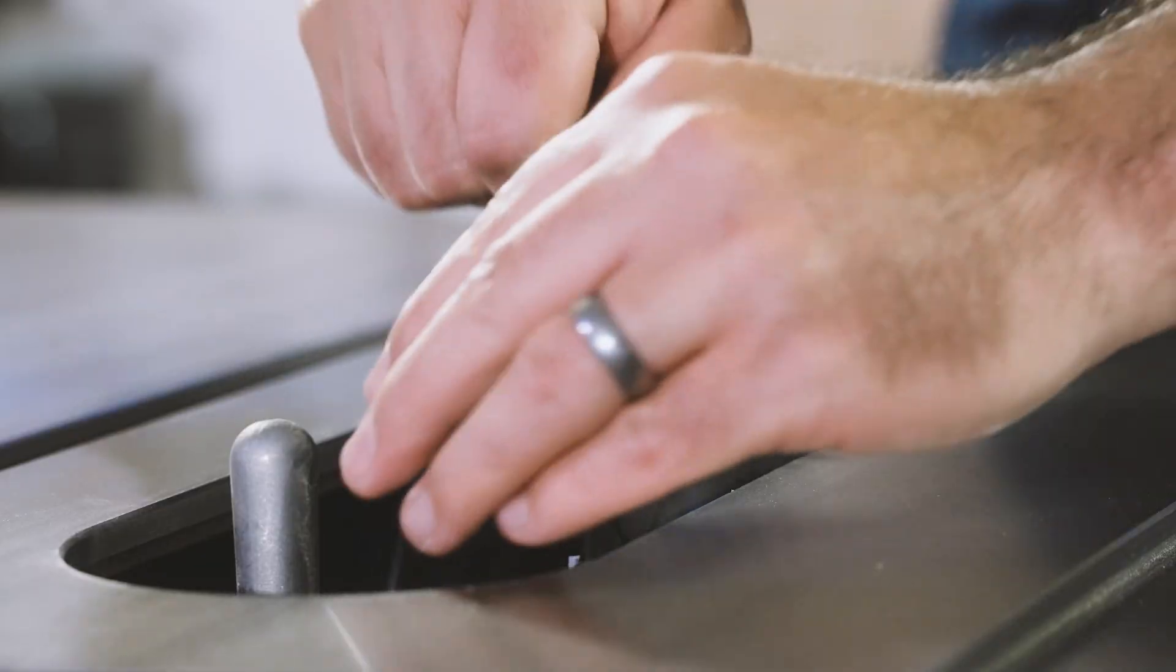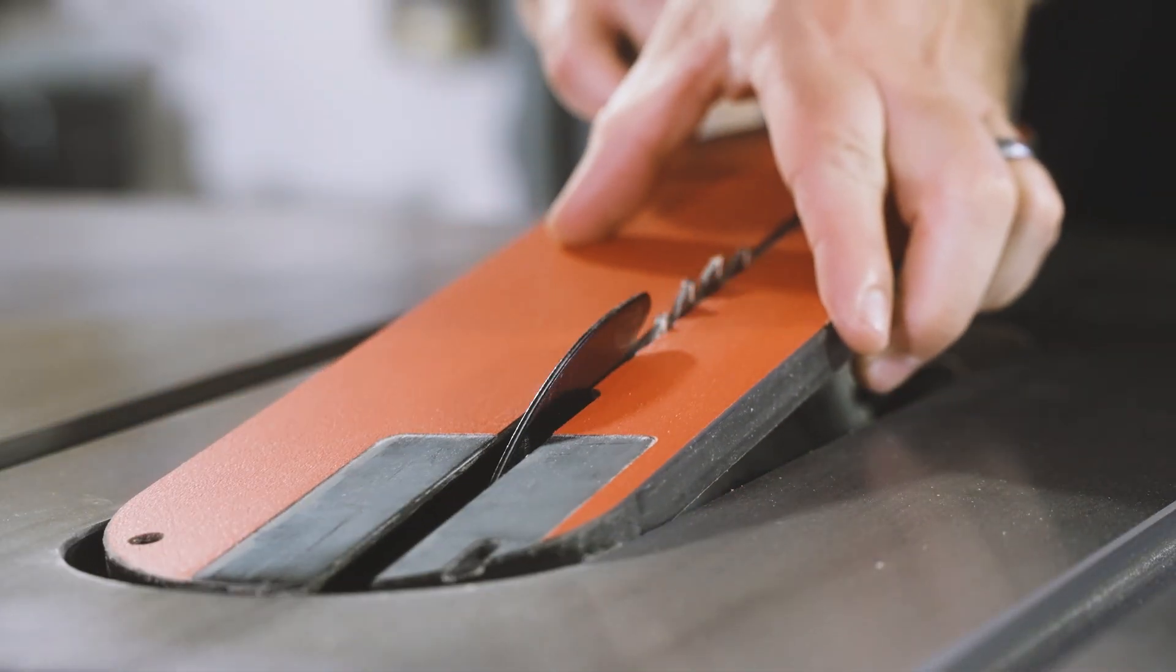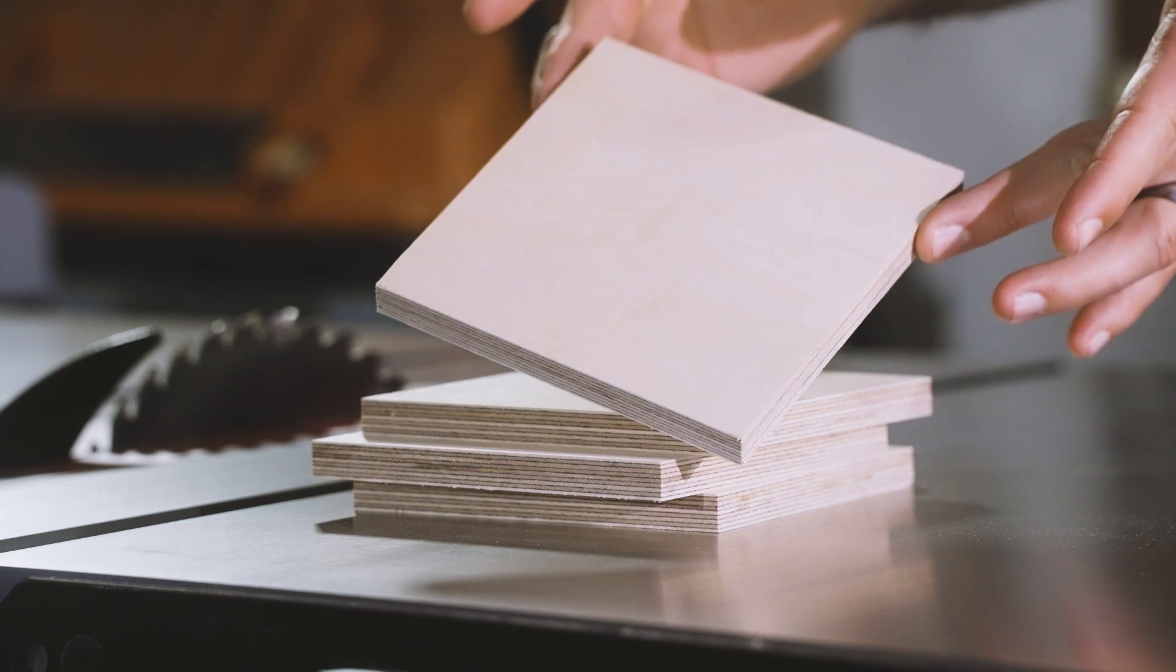Now we can move the fence out of the way and switch over to the riving knife. We're going to turn these squares into triangles.